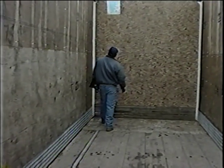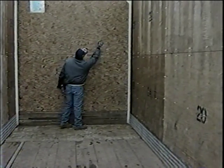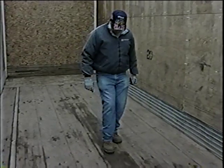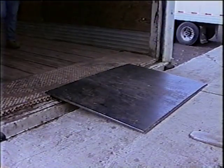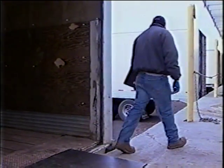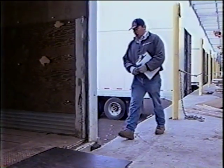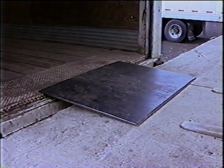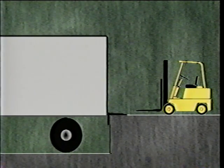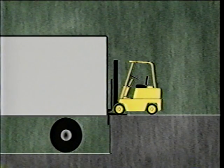Next, inspect the inside of the trailer. Is the front wall solid? Are there any spongy spots, holes, or broken and cracked decking in the floor that could cause the forklift to break through? Finally, check the dock plate going into the trailer and make sure it is properly secured between the dock and the trailer. These simple steps may mean the difference between safe loading and an unnecessary accident. Failing to do so could cause a serious accident, as a position shift of the trailer or dock plate can have serious consequences.